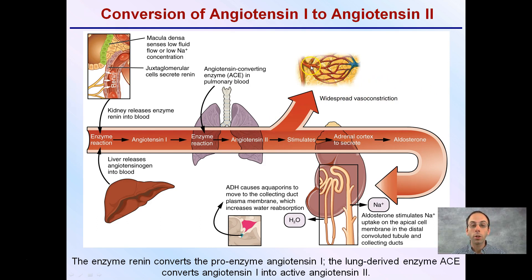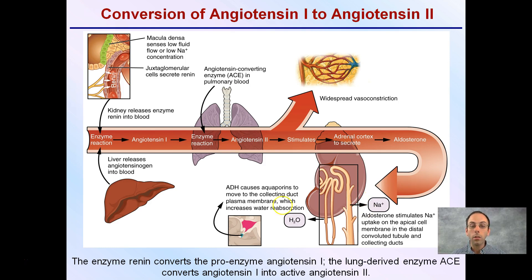Arterioles are going to constrict or get smaller. Angiotensin-2 stimulates the adrenal cortex to secrete aldosterone, which ultimately causes the kidneys to retain more water by stimulating sodium uptake in the apical cell membrane in the distal convoluted tubule and collecting ducts. ADH also causes aquaporins to move to the collecting ducts and plasma membrane, increasing water reabsorption. All of this helps the body regulate blood volume and pressure.